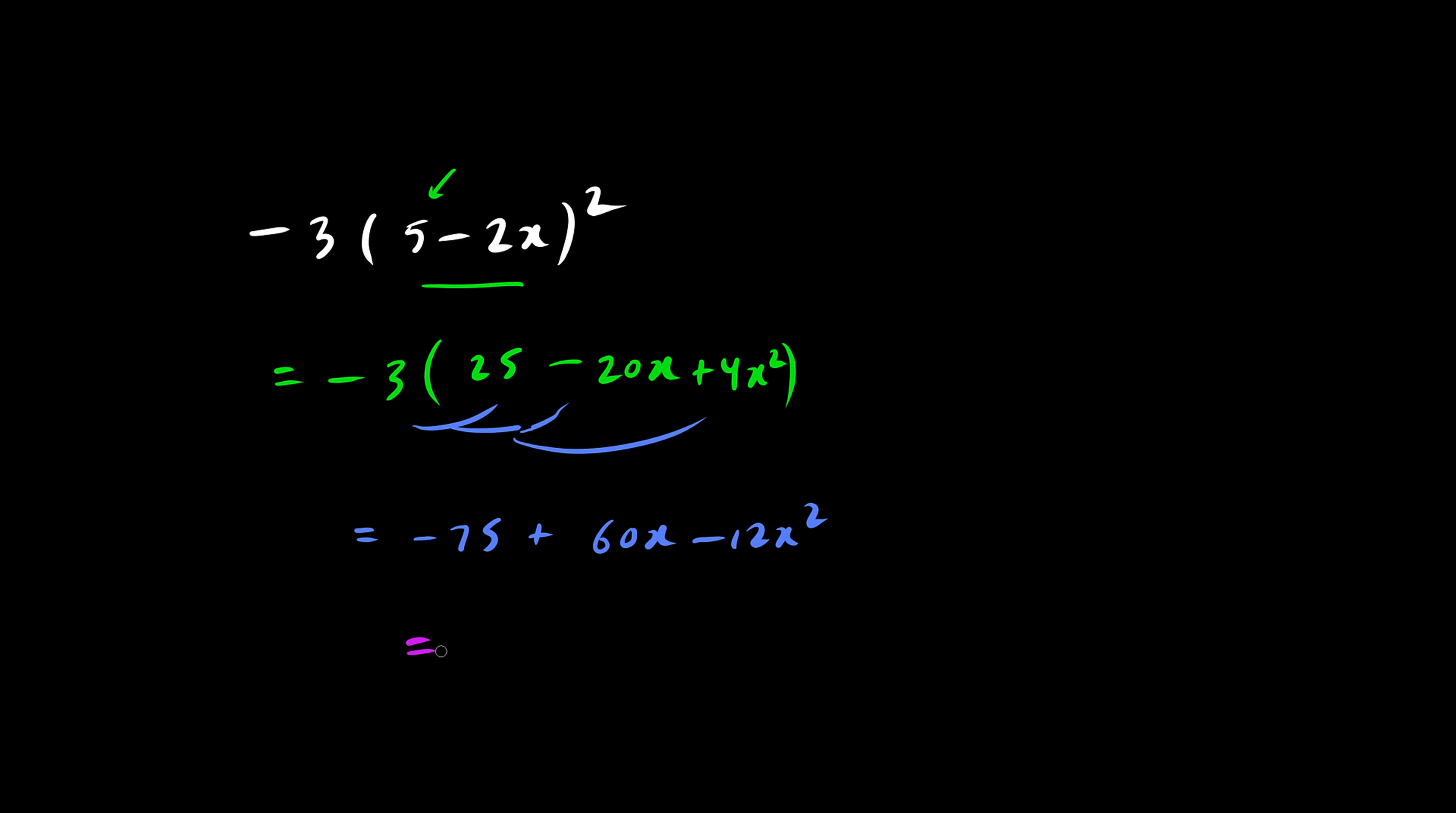And this happens to be the same thing as negative 12x squared plus 60x minus 75. We just rearranged the terms. Thank you.